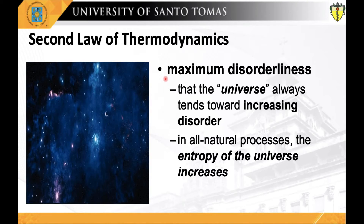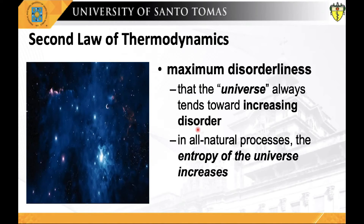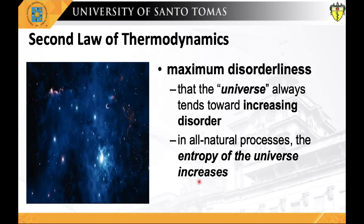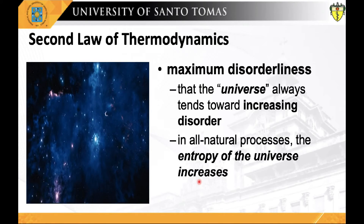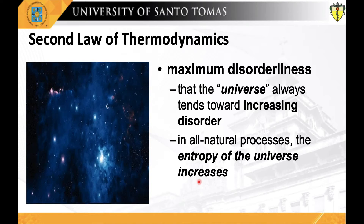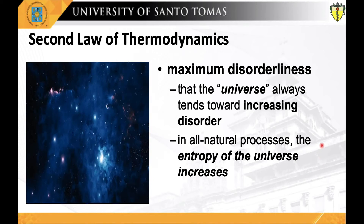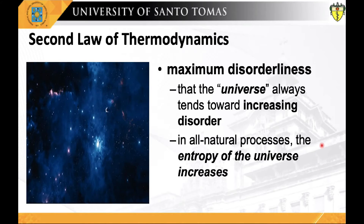The second law of thermodynamics states that the universe always tends toward increasing disorder. In all natural processes, the entropy of the universe increases. Living organisms consist of collections of molecules much more highly organized than the surrounding materials from which they are constructed, and organisms maintain and produce order seemingly oblivious to the second law. But living organisms do not violate the second law — they operate strictly within it. To discuss the application of the second law to biological systems, we must first define those systems and their surroundings.